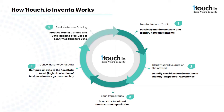Inventa catalogs and organizes all of this managed PII data, including all of the copies and partial copies of the data, to be available for your data subject access requests, security audits, and other risk management and privacy purposes. This is an automated, self-updating process that ensures you always have access to the most current information about the PII in your environment.